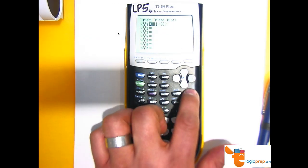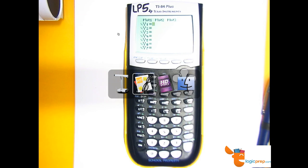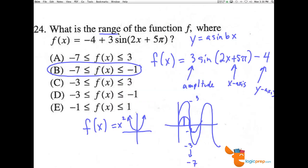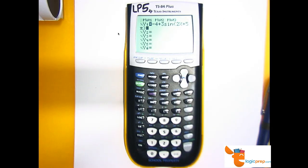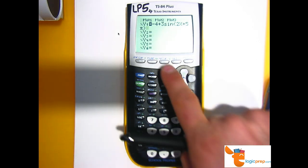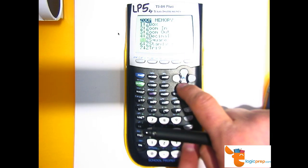So here I am in y equals. Now, it was negative 4 plus 3 sine 2x plus 5 pi. I go back to my calculator here. I plug this in. And now I'm going to hit zoom trig to get myself a nice looking trig graph.